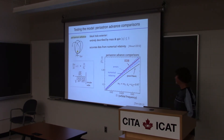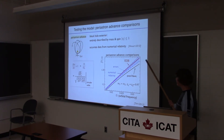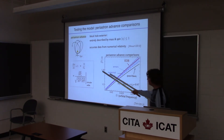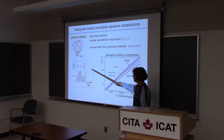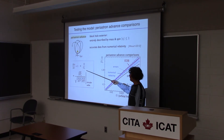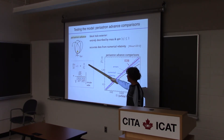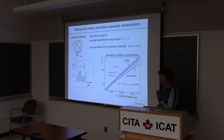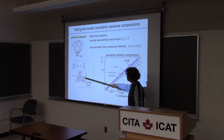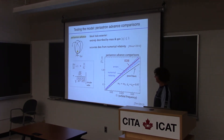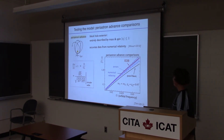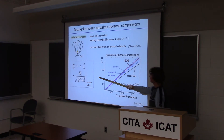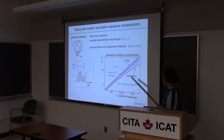He spent a lot of time getting it very accurately, as you can see in the figure. For the effective one-body model, you can very easily compute the peri-astron advance as the ratio of the orbital frequency to the radial frequency, working in the limit of almost circular orbits — you just take partial derivatives of the Hamiltonian. Then we can compare the results from the effective one-body to numerical relativity.